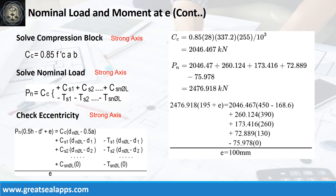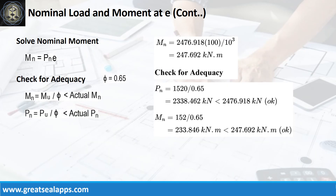Given fc' equals 28 MPa, height of stress block equals 337.2 mm, and column width equals 255 mm, the force of the compression block is 2046.467 kN. By summing up all the forces, the nominal axial load is 2476.918 kN. Follow the given computations for final check of eccentricity at 100 mm. Given nominal axial load equals 2476.918 kN and E equals 100 mm, the nominal moment is 247.692 kNm.